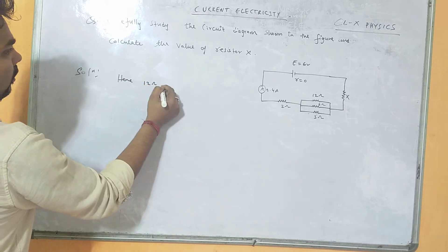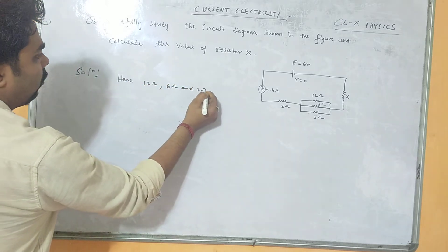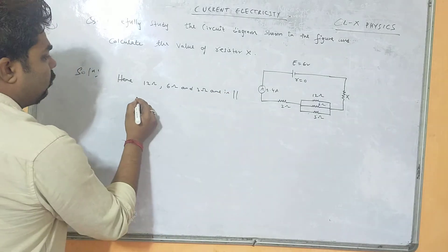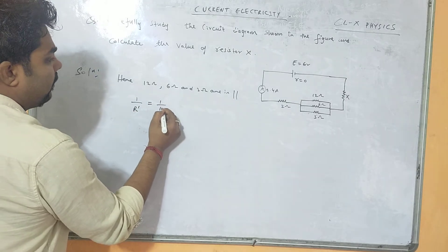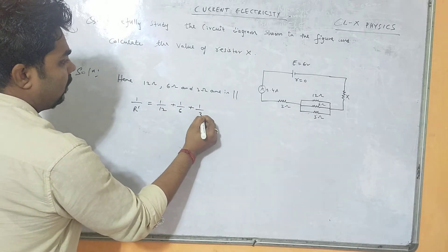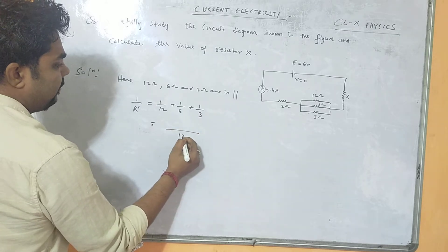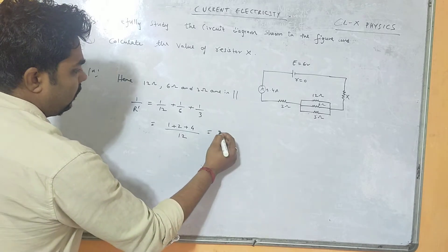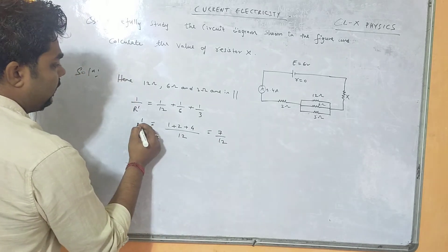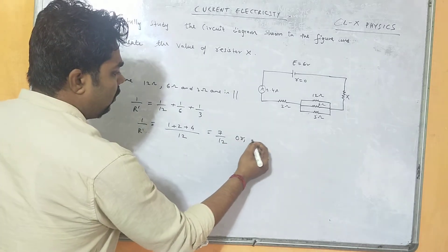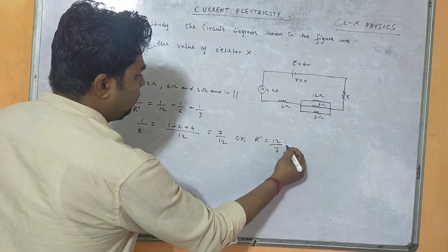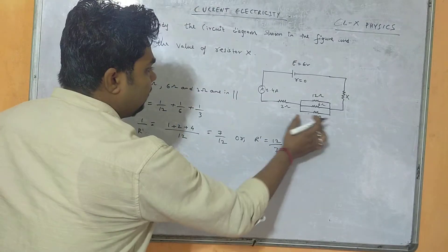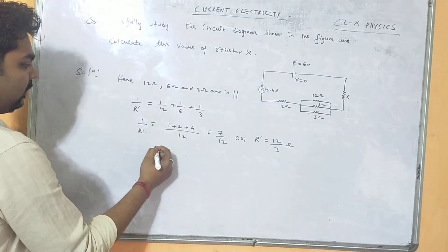First we will calculate the parallel resistance. Here 12 ohm, 6 ohm, and 3 ohm are in parallel. So 1/R' = 1/12 + 1/6 + 1/3. Taking LCM we get 7/12, so R' = 12/7 ohm.